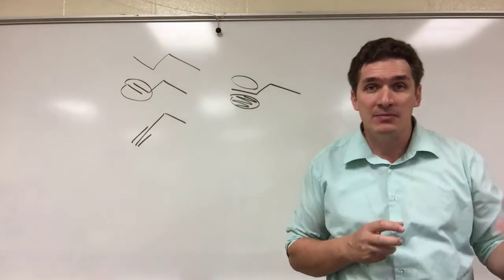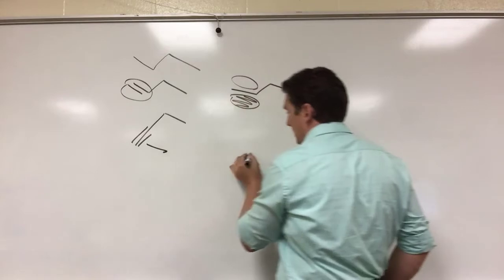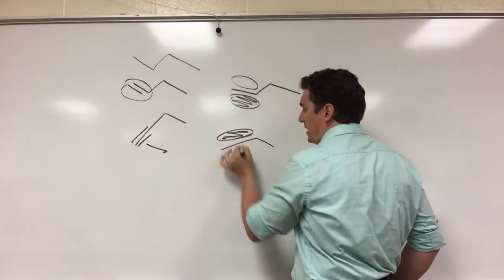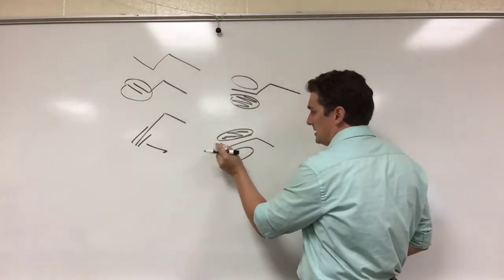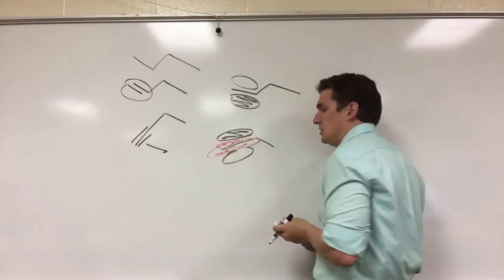Alkynes are going to act the same way, just kind of more extreme. So if you look at the alkyne and we were to draw it kind of on its side, we have one set of pi bonds due to the first bond and then a second set of pi bonds due to the triple bond.